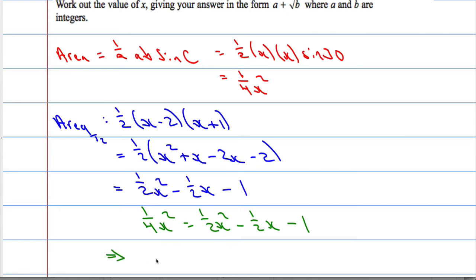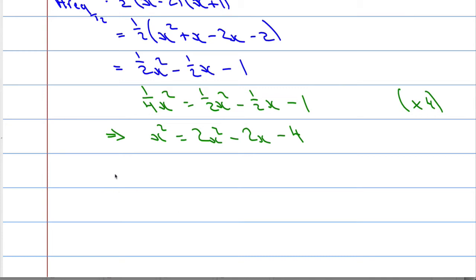I'm going to multiply everything by 4, because I don't like this quarter here. So x squared, multiplying everything by 4, x squared equals 2x squared. Multiplying this by 4, we get 2x minus 4. Let's take everything to one side. So taking x squared off both sides, we get x squared minus 2x minus 4 equals 0.